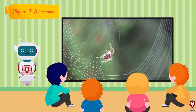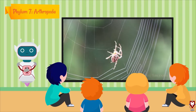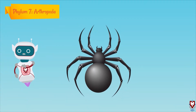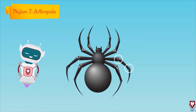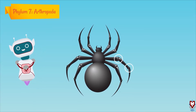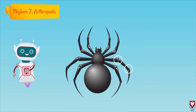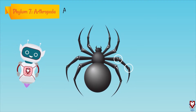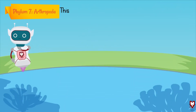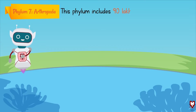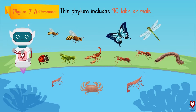Do you know that Arthropoda is a large group? It has jointed legs. Arthropoda means the animals with jointed legs. This phylum includes about 90 lakh animals and is the largest phylum among invertebrate animals.